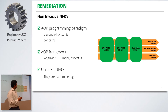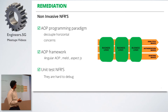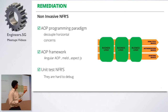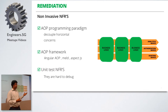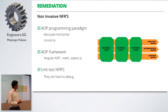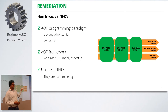How do we remediate this? Try and build your non-functional requirements in a non-invasive fashion. Instrument your core with these non-functional requirements. Favor AOP — aspect-oriented programming — as a programming paradigm to decouple these horizontal concerns. There are frameworks available in JavaScript that can help you do this, such as Angular AOP, AspectJS, or MEL. Angular AOP supports even promises, so you can instrument your code and when promises return, you can actually do things. And obviously, unit test these NFRs — they are part of the codebase once they become instrumented.